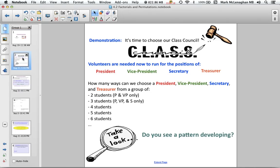Alright, so the first example we'll look at is we're going to pick the class council or SAC, and we need four positions filled, so President, Vice President, Secretary and Treasurer.